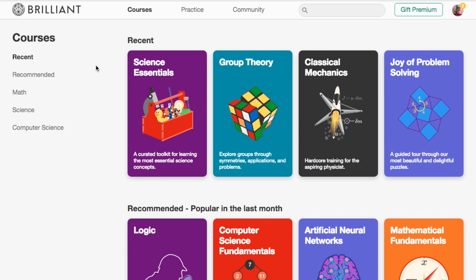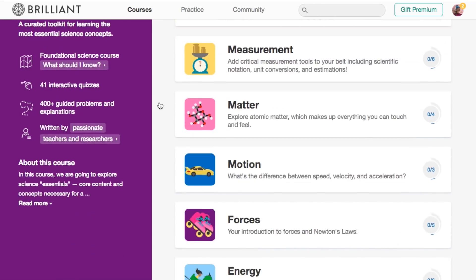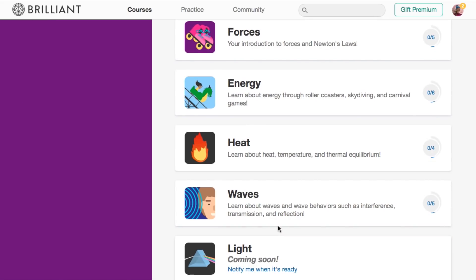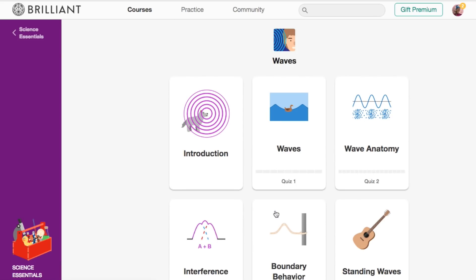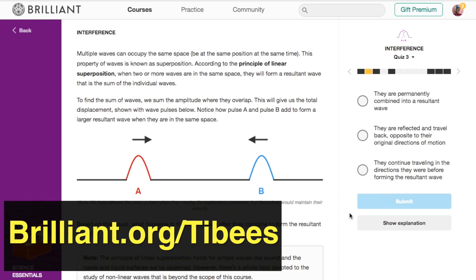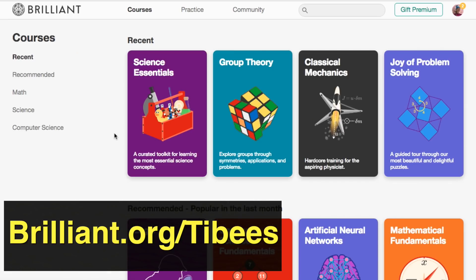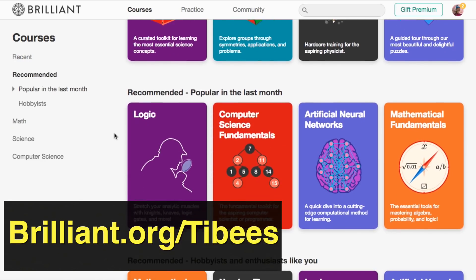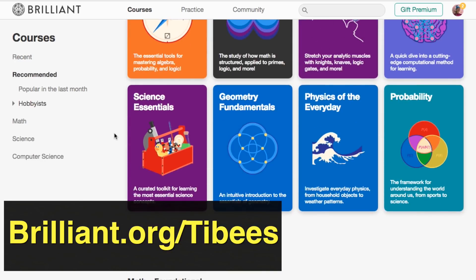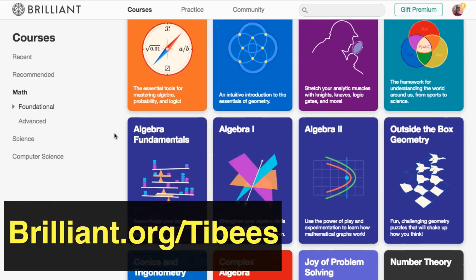I would like to thank brilliant.org for sponsoring this video. Brilliant have a course on science essentials including waves and interference. If you would like to learn about these topics in an engaging way, then I would encourage you to go to brilliant.org/tibees and sign up for free. The first 200 people to follow that link will also get 20% off an annual premium subscription. If you want something more advanced than the science essentials, you can also explore some of the most challenging ideas across math and science.